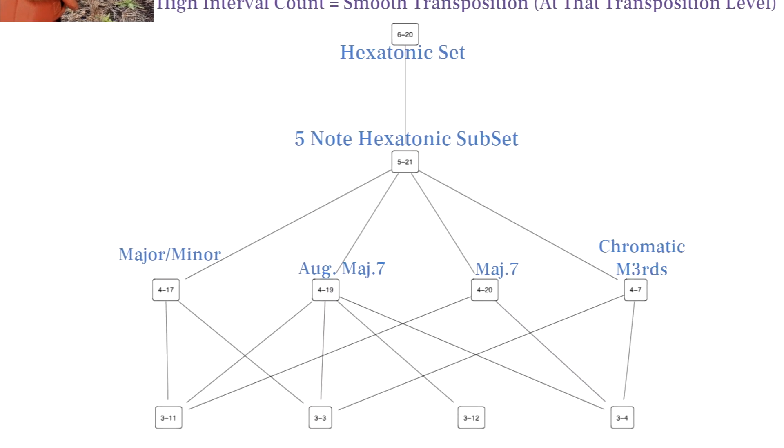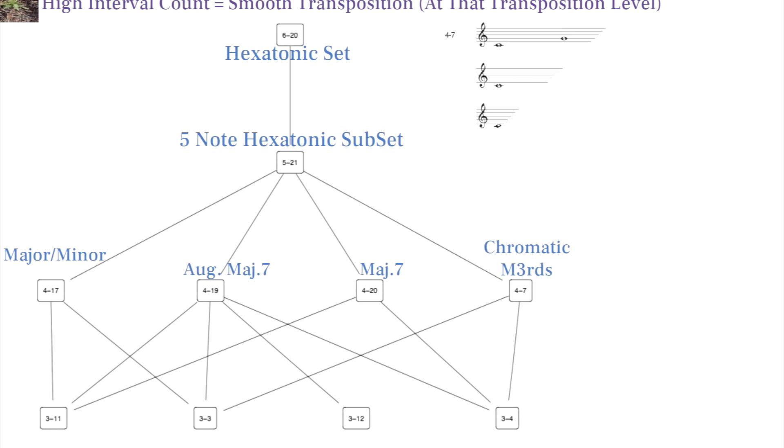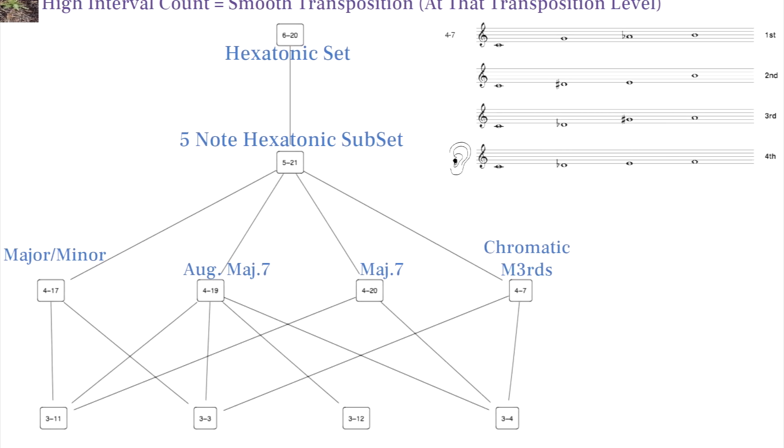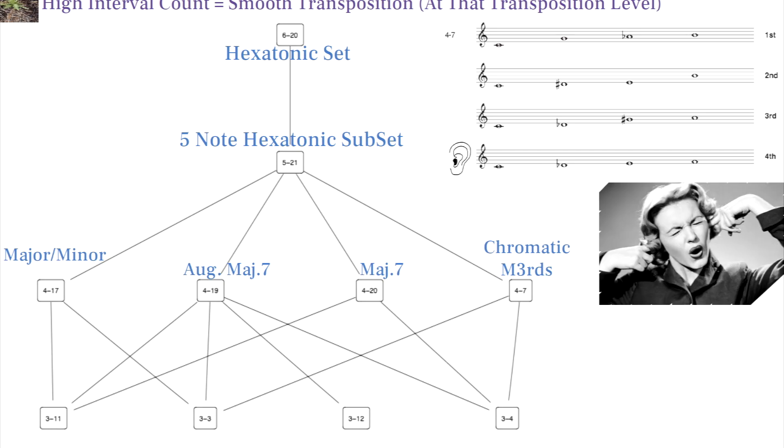The last set to mention is 4-7, which is like two major 3rds a half step away. This is the most dissonant 4-note hexatonic subset containing the most half steps and it doesn't sound consonant as a chord.